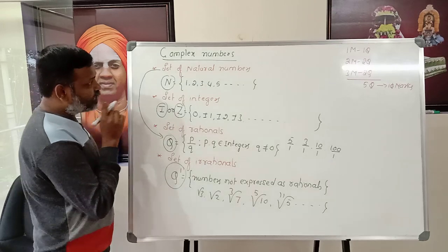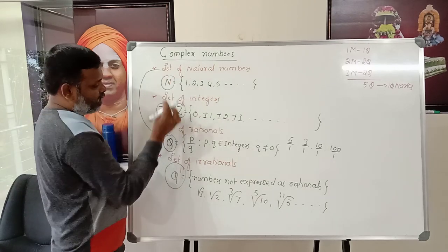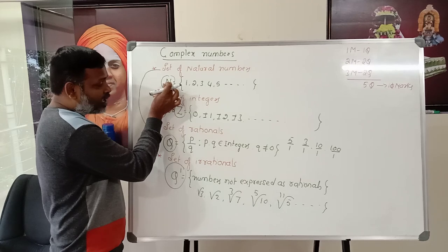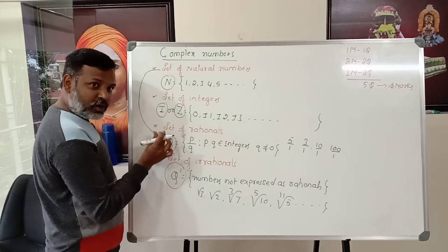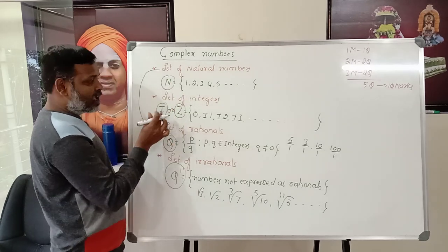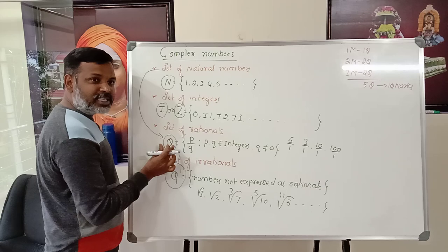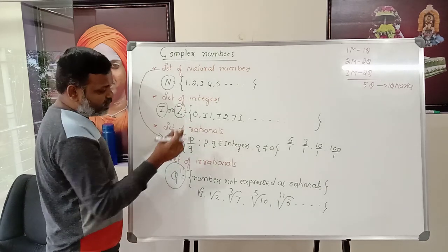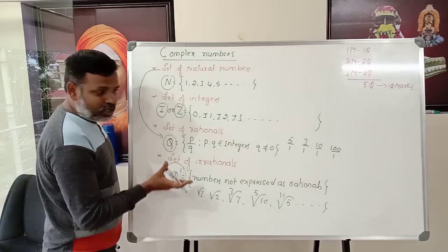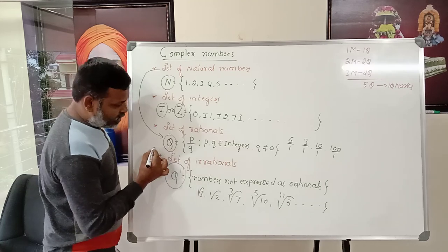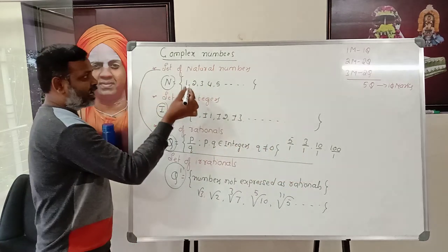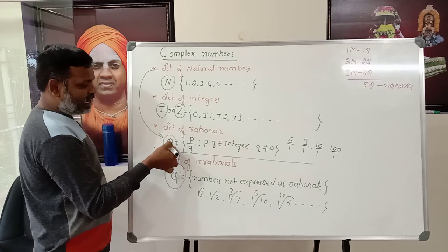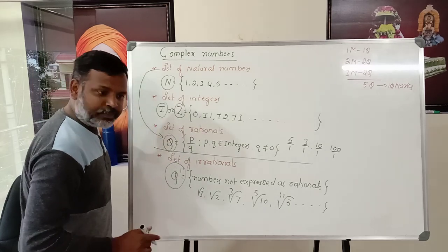So N belongs to Q — all natural numbers can be expressed as rational. All integers can also be expressed as rational. But integers and natural numbers cannot be expressed as irrational. So we put natural numbers, integers, and rationals in one category, while Q′ is separate.